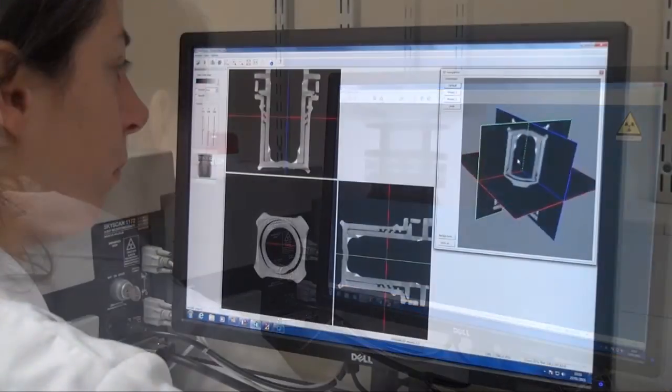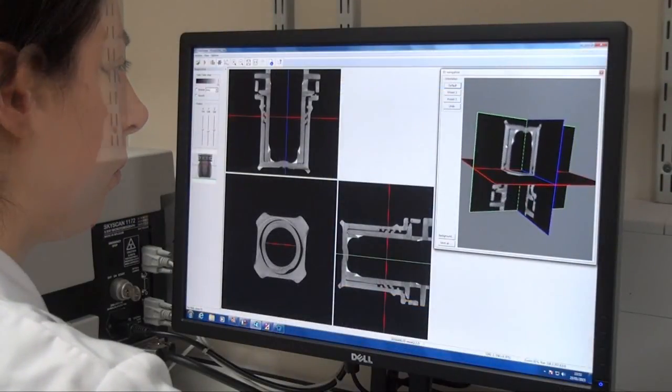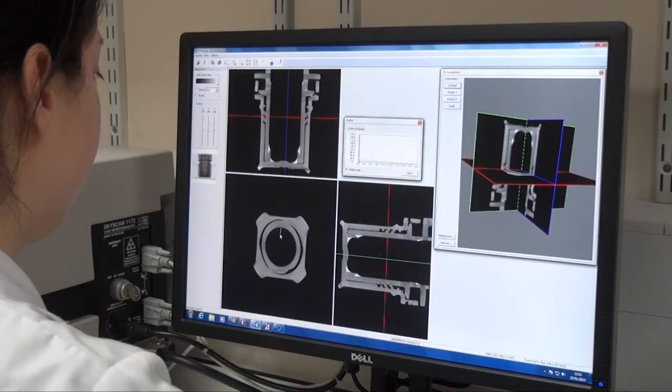Here, cross sections of any part of the cap can be viewed without the need to cut it. This can highlight defects or weaknesses and provide a range of measurements to check against specifications.